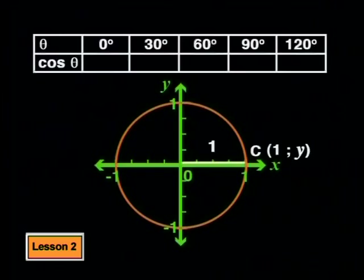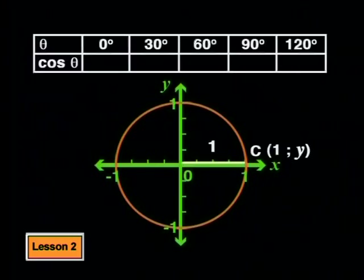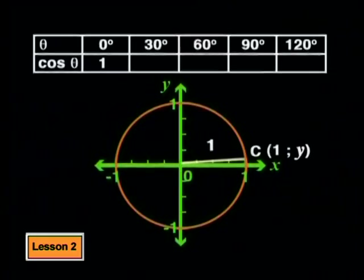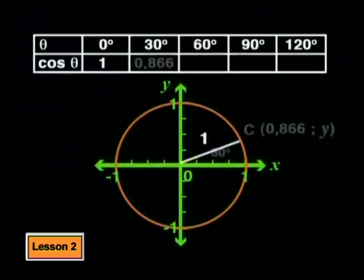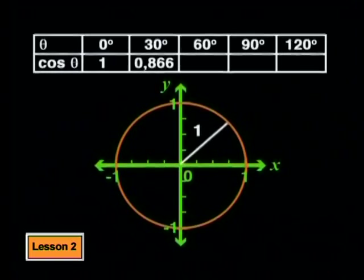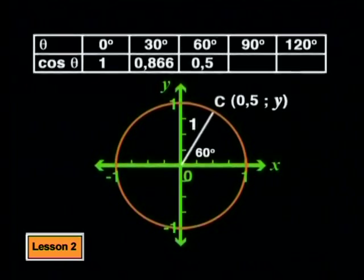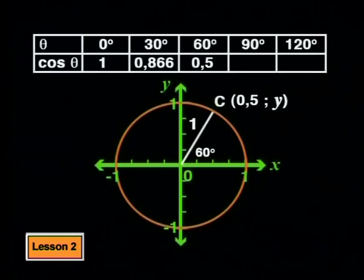Let's see what values we get for cosine theta if we rotate the line around the circle. Just as we did with sine theta, we can make a table of values for angle theta and for the value of cosine theta. At 0 degrees, cosine theta, or the x value, is 1. If we rotate the line to 30 degrees, cosine theta is 0.866. At 60 degrees, we can see from the unit circle that cosine theta is 0.5. We want to set up a function that shows how cosine theta changes as the angle theta changes. I've already worked out three of these values and I'm going to leave you to work out the missing y values in this table.